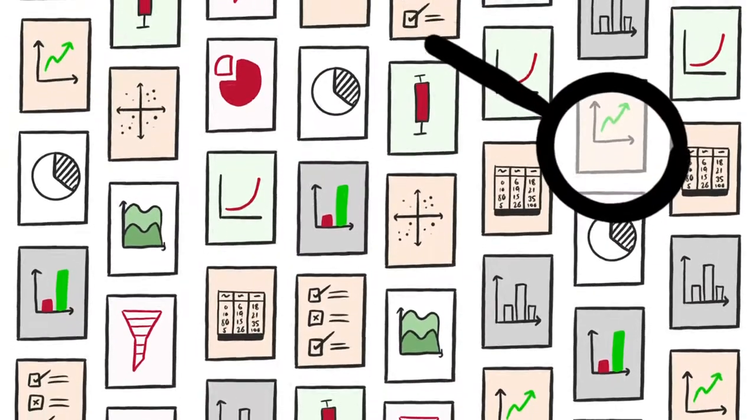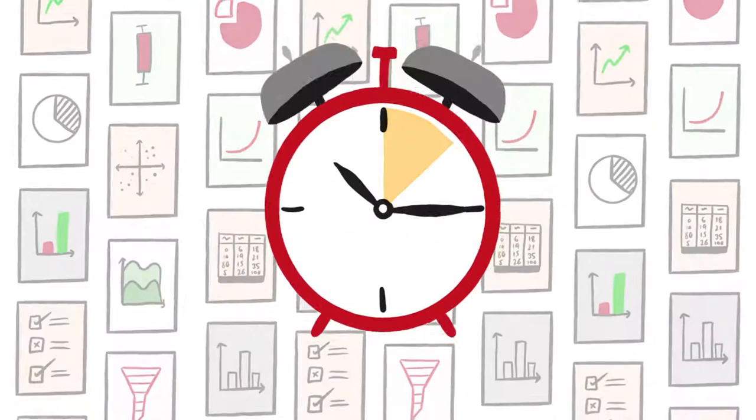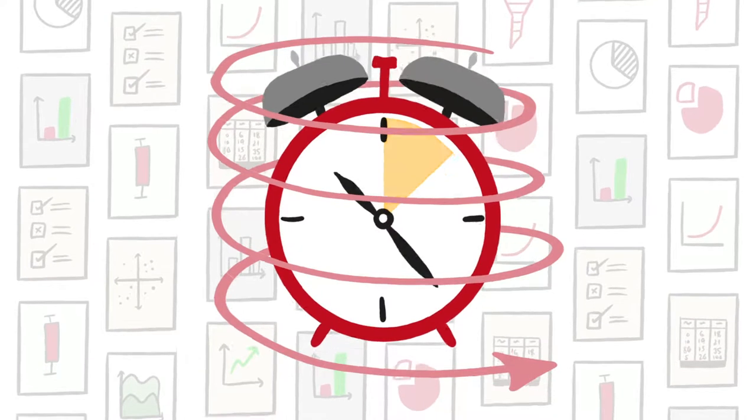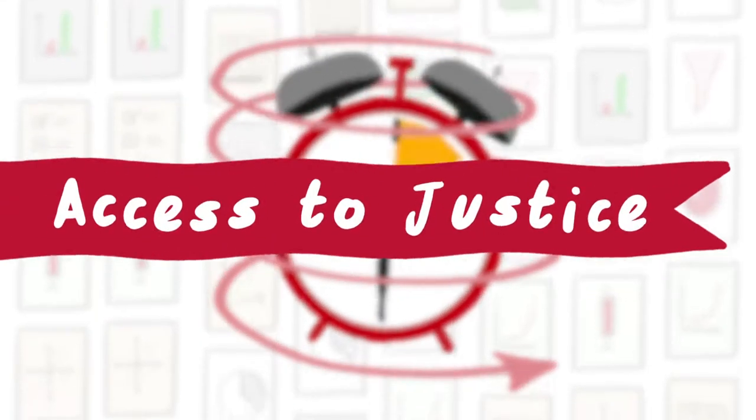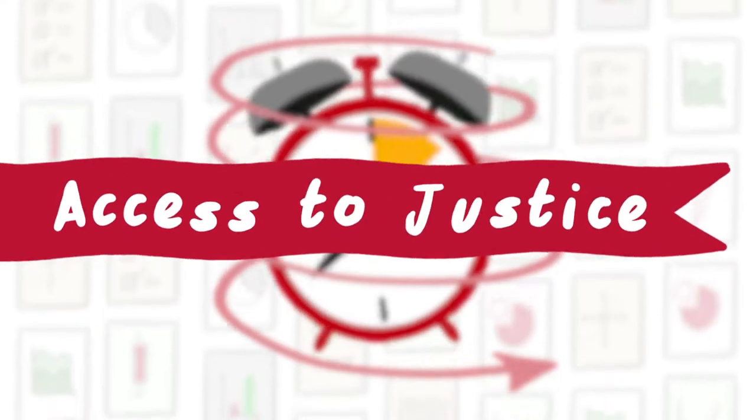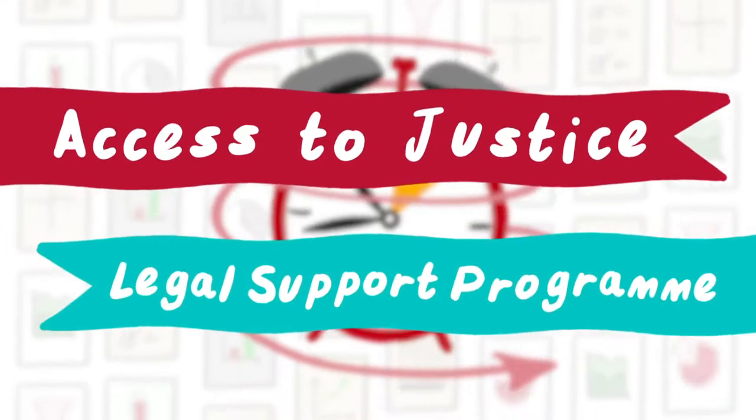This more nuanced evidence, coupled with what we know about consequences of inaction and how problems can spiral, helps us describe why access to justice is so important and make the case for specific policy areas, such as our legal support programme.